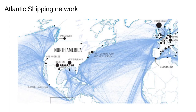The original graph theory problem is about the transport of people around a city, and graph theory is still extensively applied to solve problems in transport. For example, if each node is a city and each edge is a road, we have an abstract representation of the highway system. If each node is a port and each edge is a shipping lane, then we have a representation of the global supply chain.